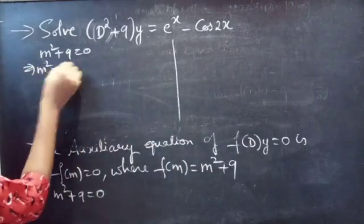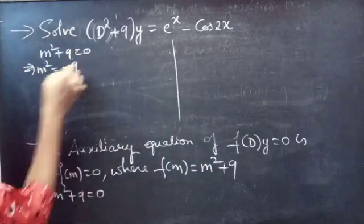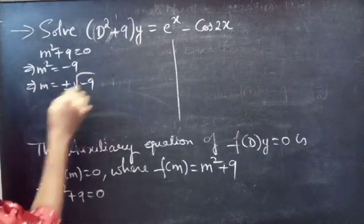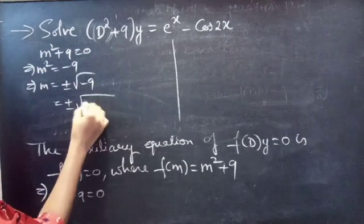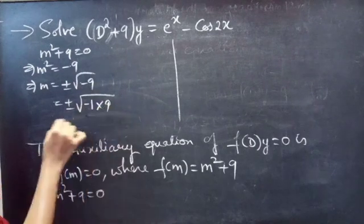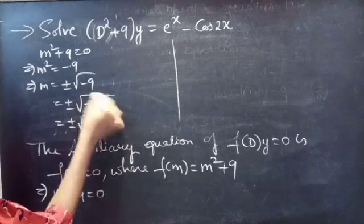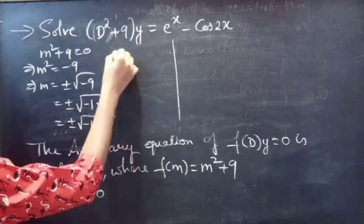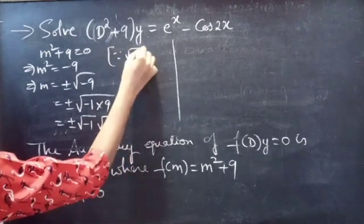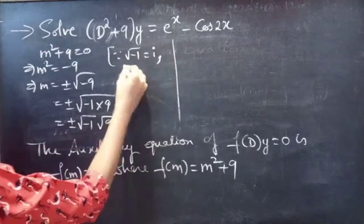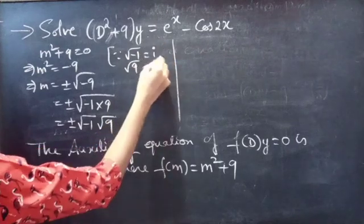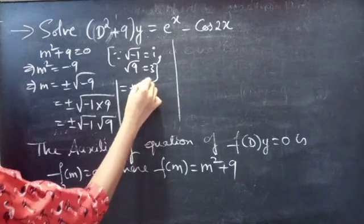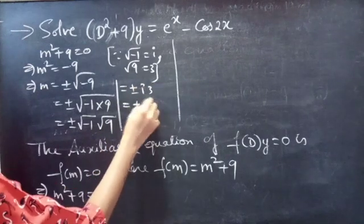From m² + 9 = 0, we get m² = −9, so m = ±√(−9). Writing −9 as −1 × 9, we split this as √(−1) × √9. Since √(−1) = i and √9 = 3, this becomes ±3i.